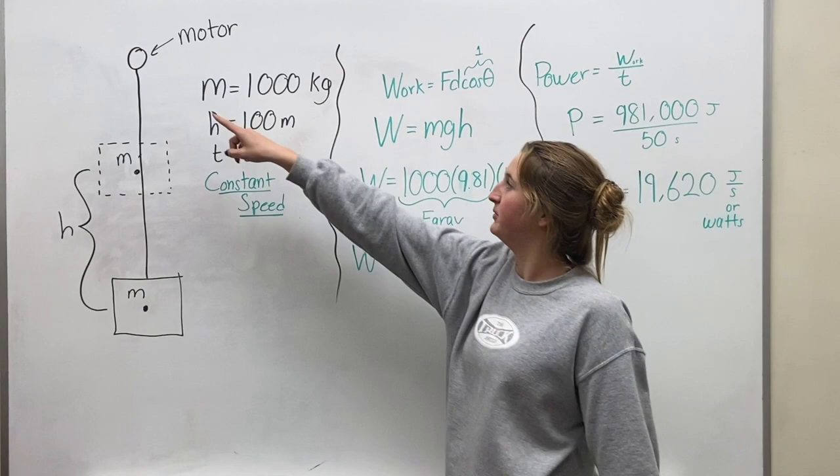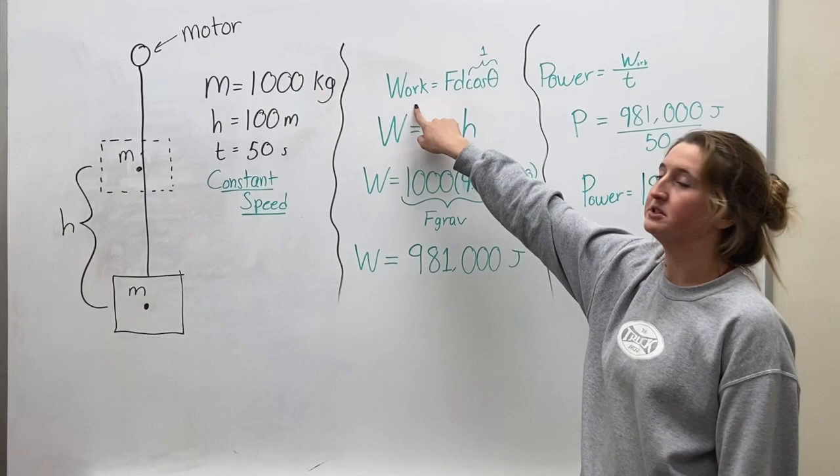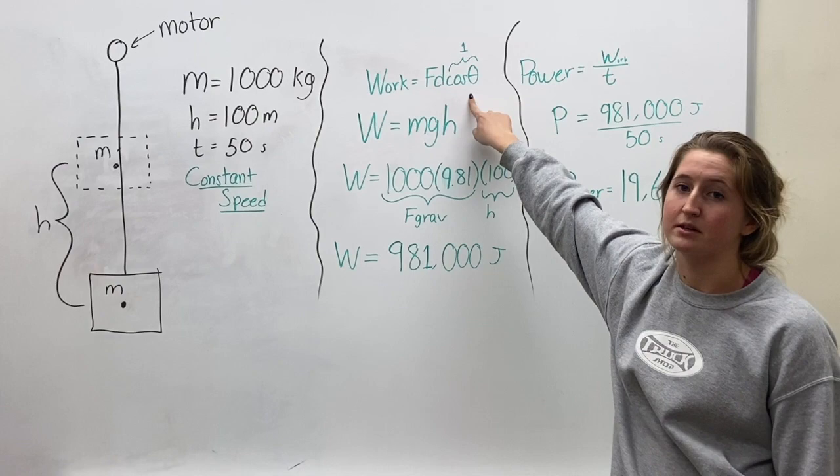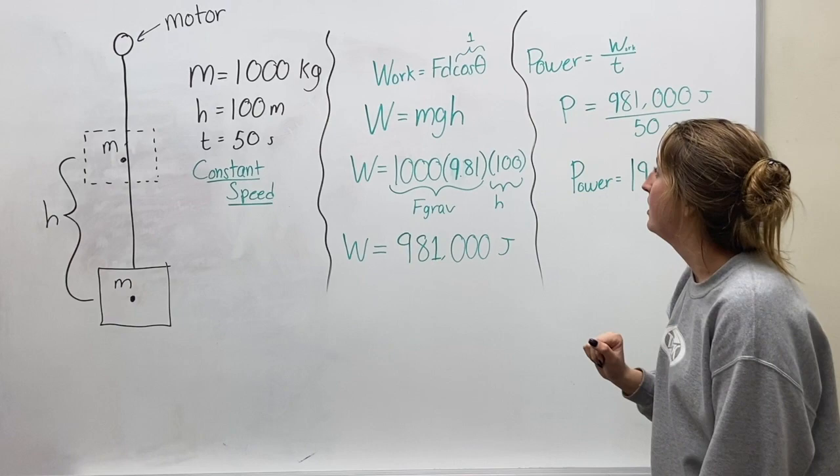So we're asked to find the work done by the motor when it's pulling up the elevator. We have our equation for work, which is F d cosine theta. But in this case, theta is zero, so that's just going to be one, and that's just going to be a multiplier that's going to keep this the same.